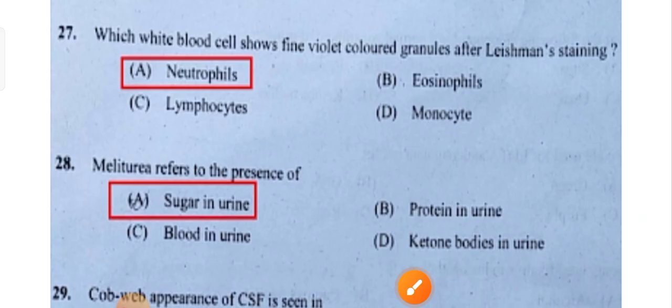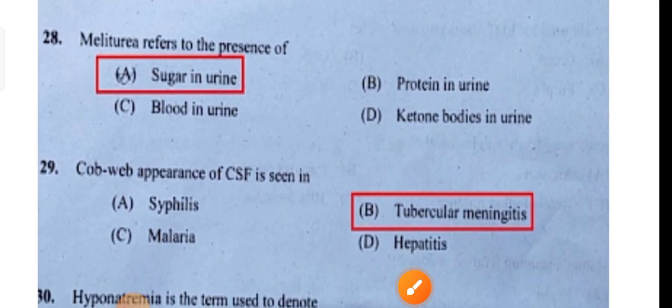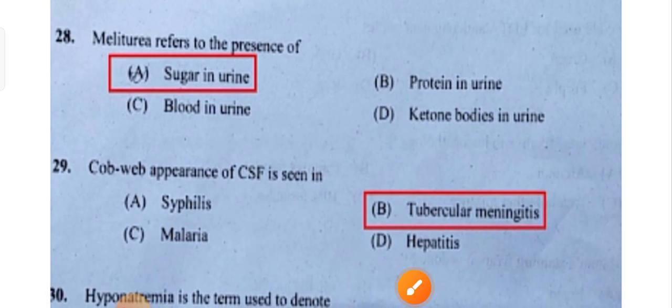Mellituria refers to the presence of sugar in the urine. Option A is the correct answer.